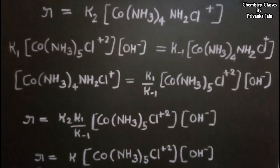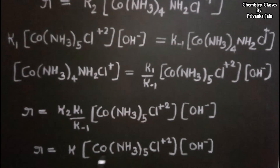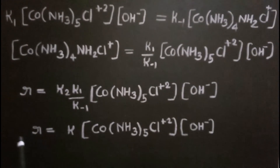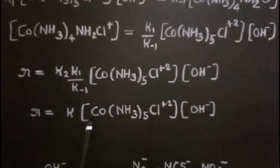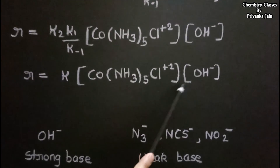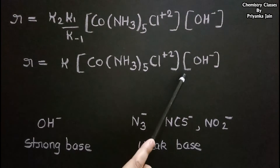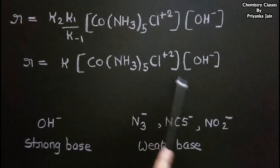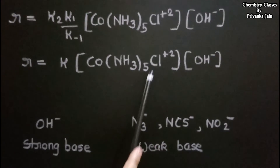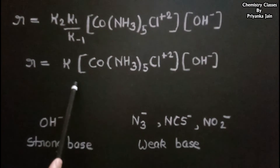Combining the constants: Rate = k × [complex] × [OH⁻]. This shows the rate depends on both the complex concentration and OH⁻ concentration. But at higher OH⁻ concentration, the concentration term becomes effectively constant, so the rate becomes independent of OH⁻ concentration and the reaction becomes first order. This explains the observed behavior.